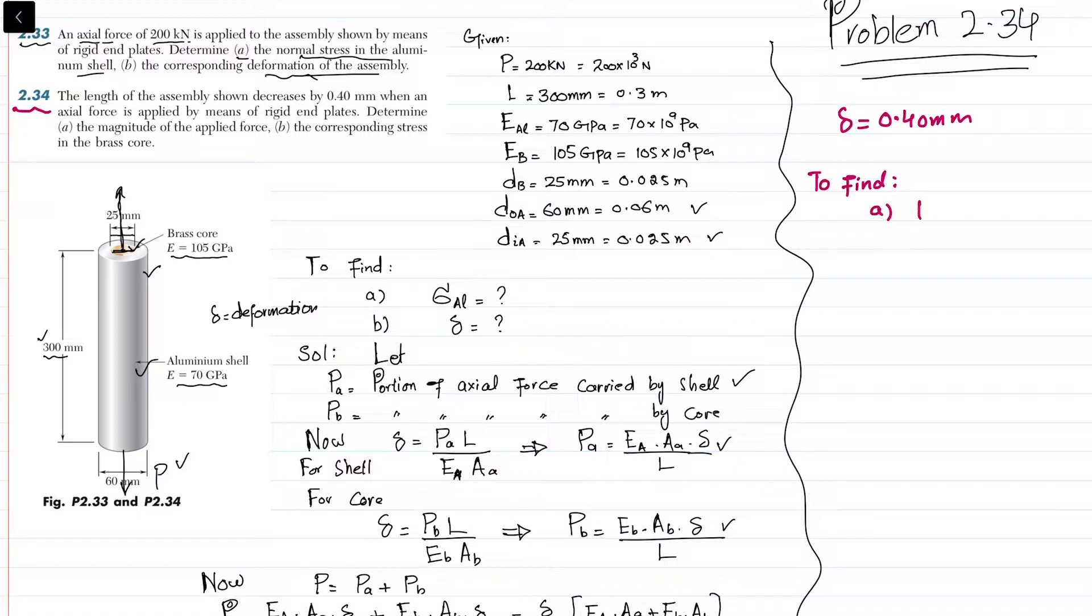We have to find the magnitude of applied force P and the corresponding stress in the brass core. This P load is applied to the assembly and causes a deformation decrease of 0.40 millimeters, meaning this load is compressive.